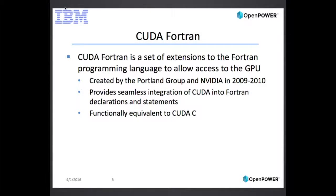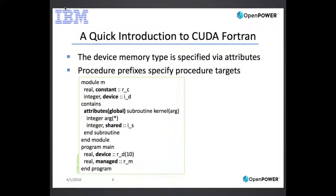CUDA Fortran is a set of extensions to the Fortran programming language that allow you to access the GPU. It was created by the Portland Group in 2009-2010. It provides seamless integration of the CUDA language into Fortran — you basically extend the declarations and statements of Fortran so you don't have to call the CUDA API explicitly as much. It's functionally equivalent to CUDA-C, so anything you can do in CUDA-C you can likely do in CUDA Fortran. CUDA Fortran provides attributes and procedure prefixes to declare variables and functions of the memory types available on NVIDIA GPUs.